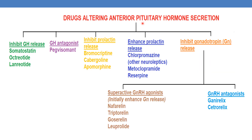Coming to the drugs that alter anterior pituitary hormone secretions. The first class is inhibition of growth hormone release — drugs are somatostatin, octreotide, and lanreotide. Next is growth hormone antagonist; the drug is pegvisomant. Next class is inhibition of prolactin release — drugs are bromocriptine, cabergoline, and apomorphine. Drugs which enhance prolactin release are chlorpromazine and other neuroleptics, metoclopramide, and reserpine.